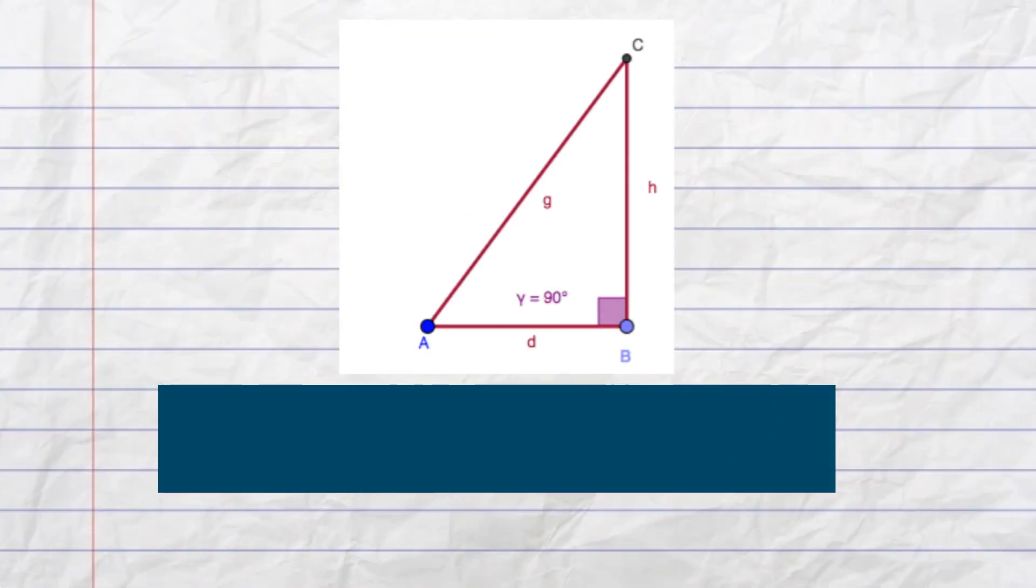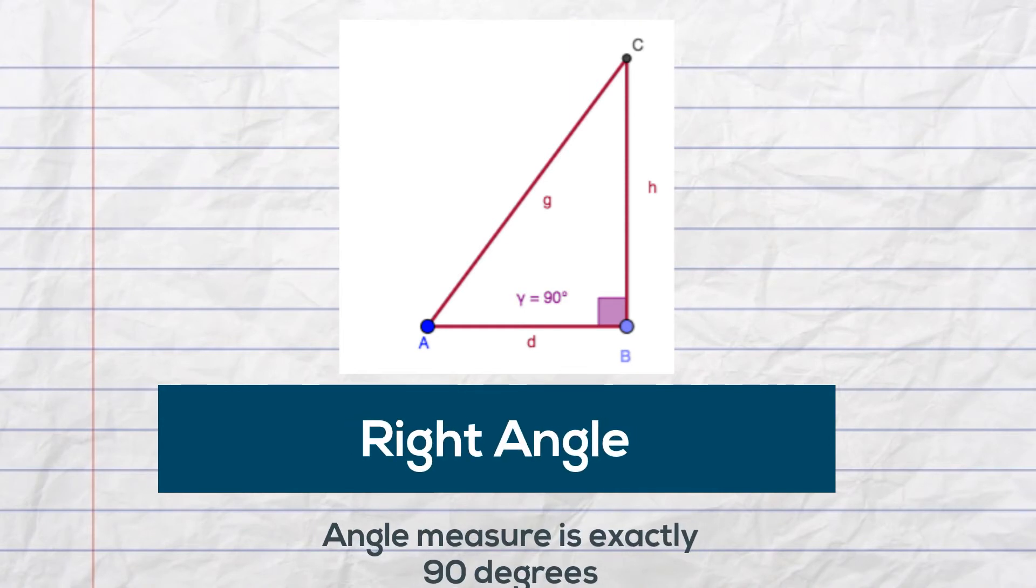Okay, how about this angle? This is a right angle and right angles measure exactly 90 degrees, and they usually have a square in the corner that tells you it's a 90 degree angle.